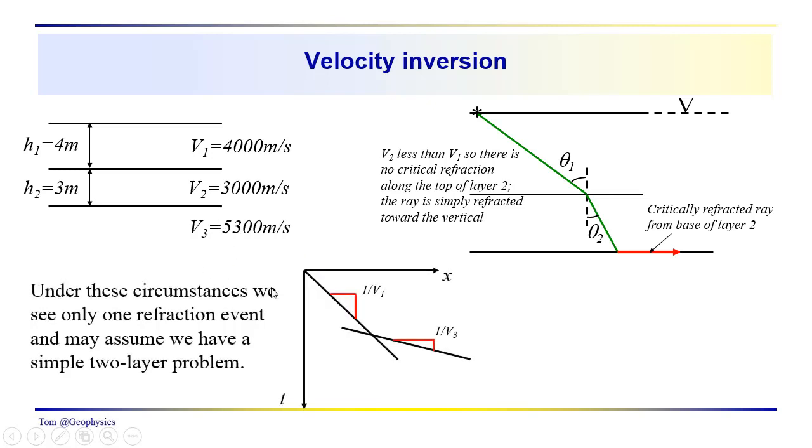So there is no critical refraction from the top of layer two out along here simply refracted. And so what we see when we collect our data, when we look at our shot data, is we see the direct arrival, the wave that's traveling directly out along the surface with velocity V1 between the source and the receiver. That's how we get our V1. And then we see the critical refraction from the base of layer two. That's traveling with the velocity V3 and has the slope 1 over V3.